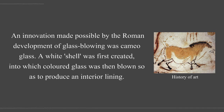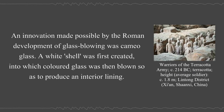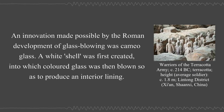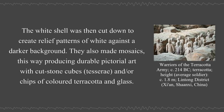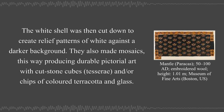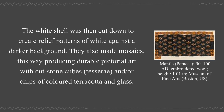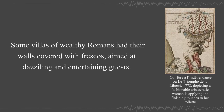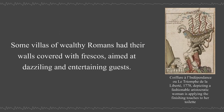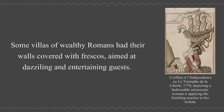An innovation made possible by the Roman development of glass blowing was cameo glass. A white shell was first created, into which colored glass was then blown to produce an interior lining. The white shell was then cut down to create relief patterns of white against a darker background. They also made mosaics, producing durable pictorial art with cut stone cubes and chips of colored terracotta and glass.